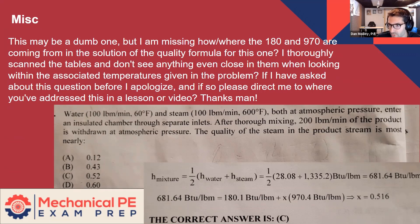No need to apologize. And if so, please direct me where you've addressed this. Thanks man. Yeah, no problem. So I think you understand the first part of the problem, and your question is just about where the 180 and 970 come from.